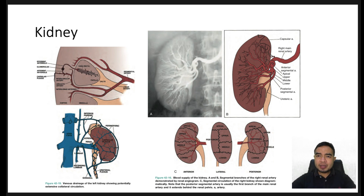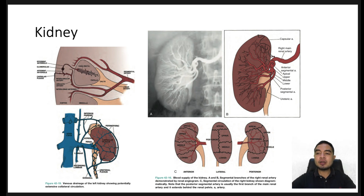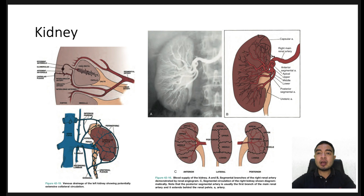The right renal vein is much shorter than the left and does not receive collateral venous drainage. The left renal vein passes anteriorly to the aorta and receives drainage from the left gonadal vein, the left inferior adrenal vein, and a lumbar vein.